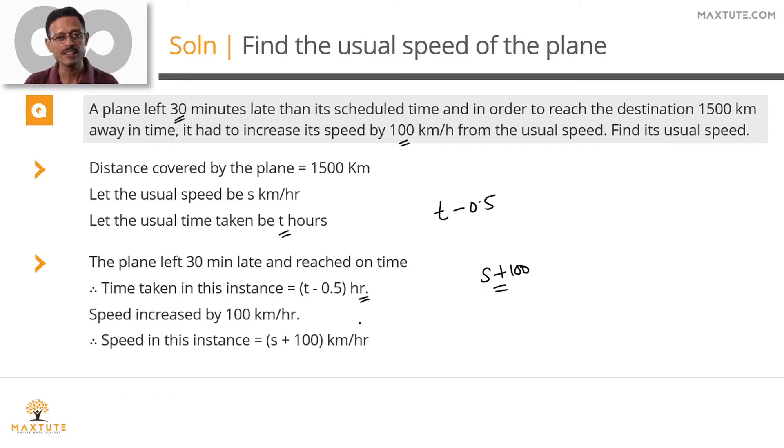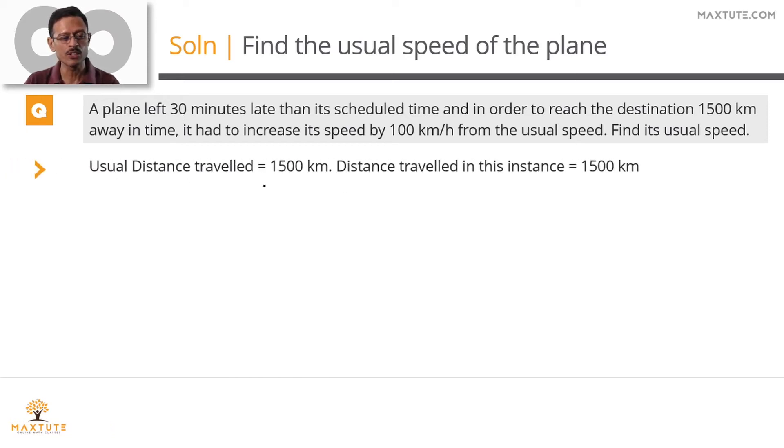How are we going to solve it? The distance traveled is 1500 kilometers irrespective of whether it left on time, whether it traveled at a higher speed. So let's equate both these things. So distance traveled usually is 1500 kilometers. In terms of an expression, this is going to be s into t is equal to 1500, speed into time.